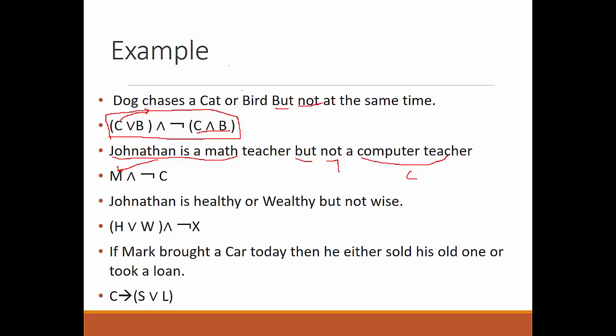'Jonathan is healthy or wealthy but not wise' — H represents Jonathan is healthy, W represents Jonathan is wealthy, and X represents wise. So we represent this as (H OR W) AND NOT X, placing 'healthy or wealthy' inside parentheses, then 'but not wise' as AND NOT X.